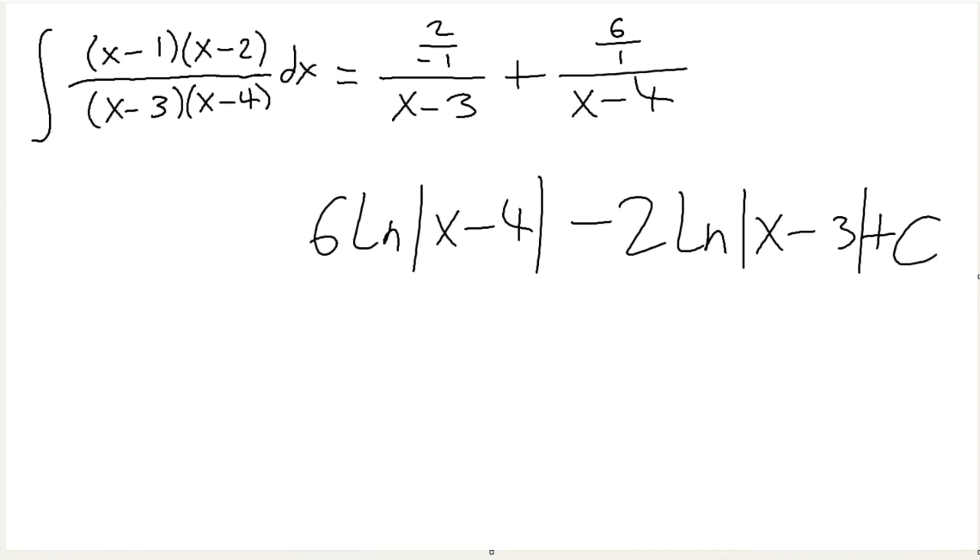You see, there is a flaw in Heaviside method. The actual answer is x plus and then everything else. But why x? Why do we need to add an x there?